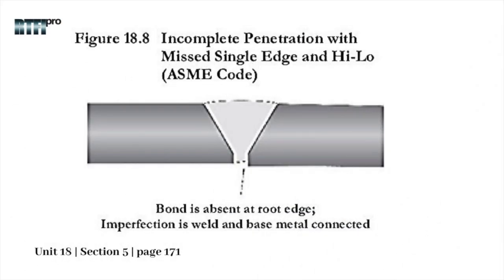Figure 18.8 shows a schematic of an incomplete penetration with only a single edge missed due to high-low. The missed single edge at the root is called incomplete penetration in accordance with ASME codes, whereas for CSA Z662 it is classified as lack of fusion. This high-low version is classified as inadequate penetration due to high-low for API 1104.